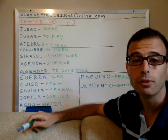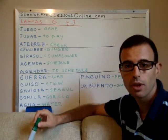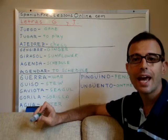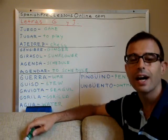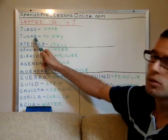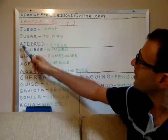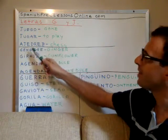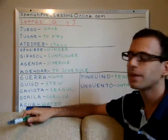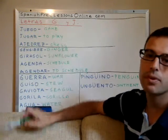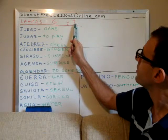Remember that Spanish verbs always end with R, and we have three groups of verbs: those that end in -AR, those that end in -ER, and those that end in -IR. 'Jugar' belongs to the group of verbs that end in -AR. And 'ajedrez' — A-J-E-D-R-E-Z — means chess, the game chess. These are some examples with the letter J.